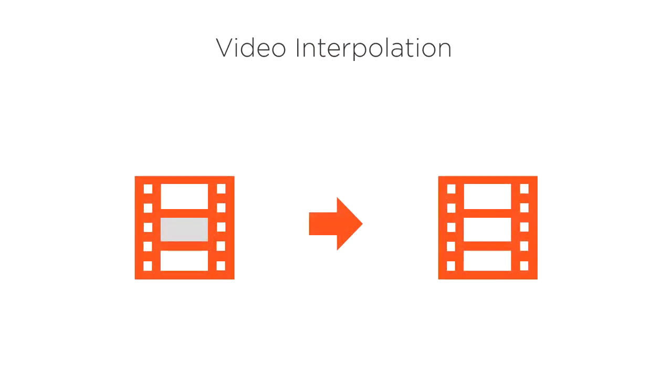First, we have video interpolation. Video interpolation allows us to predict missing video frames given both previous and subsequent frames. Essentially, it answers the question, what content should go in this missing video frame?